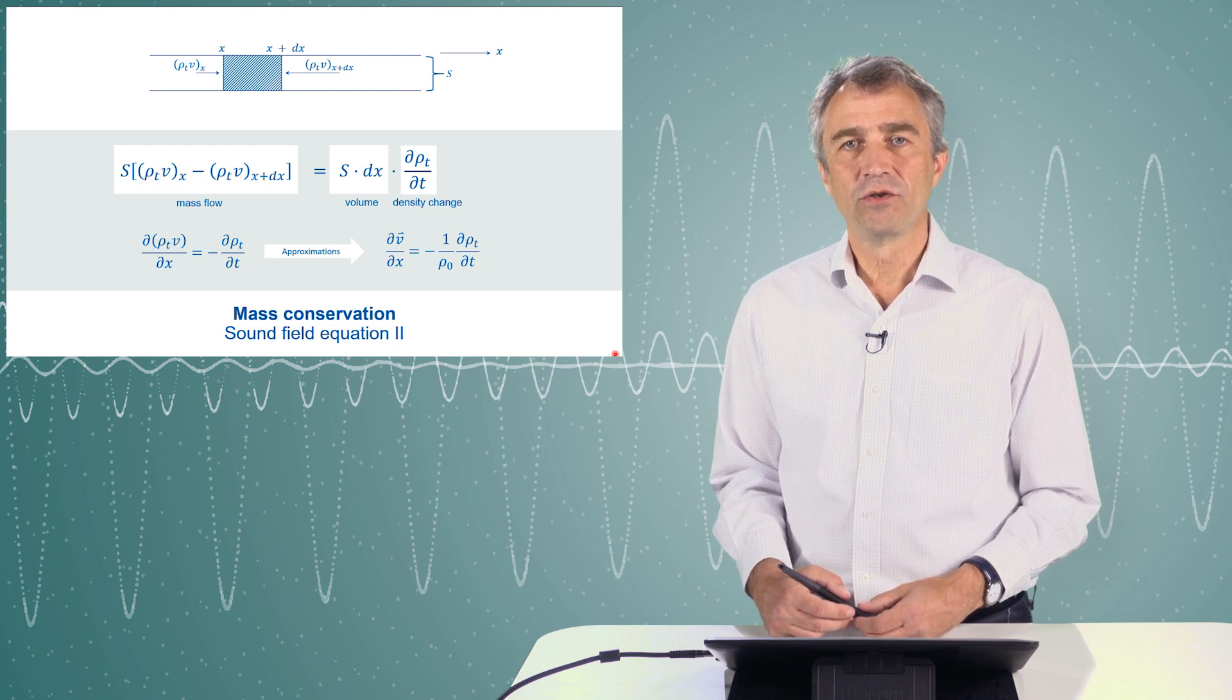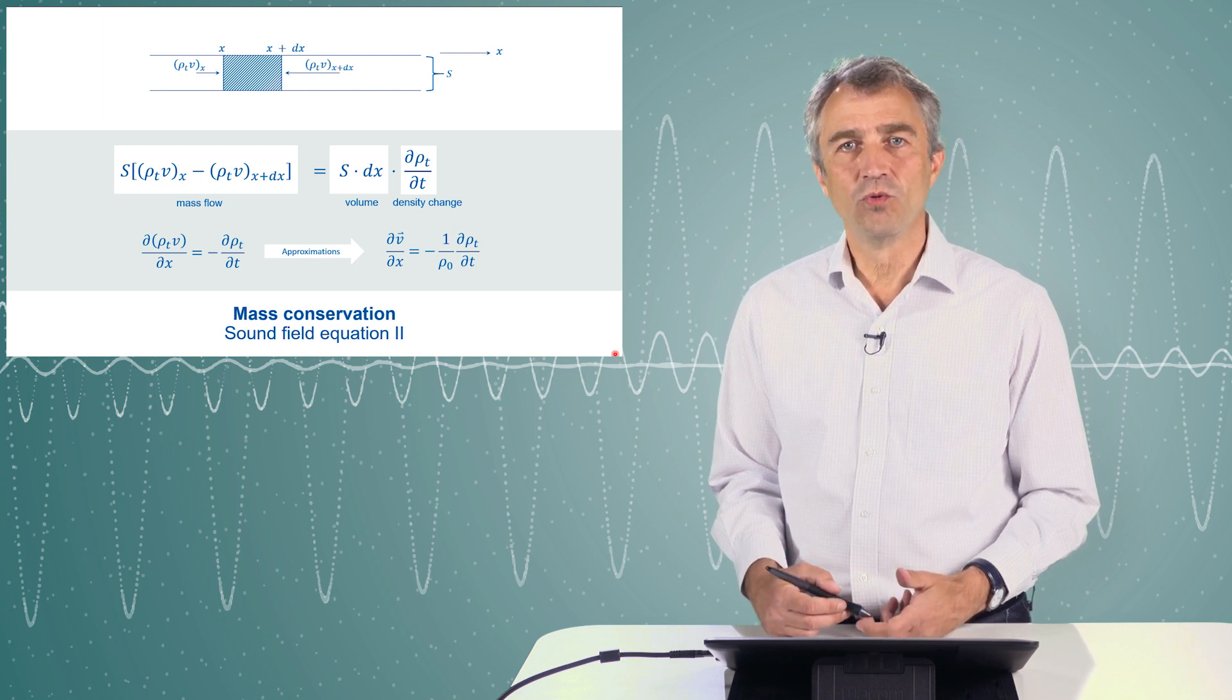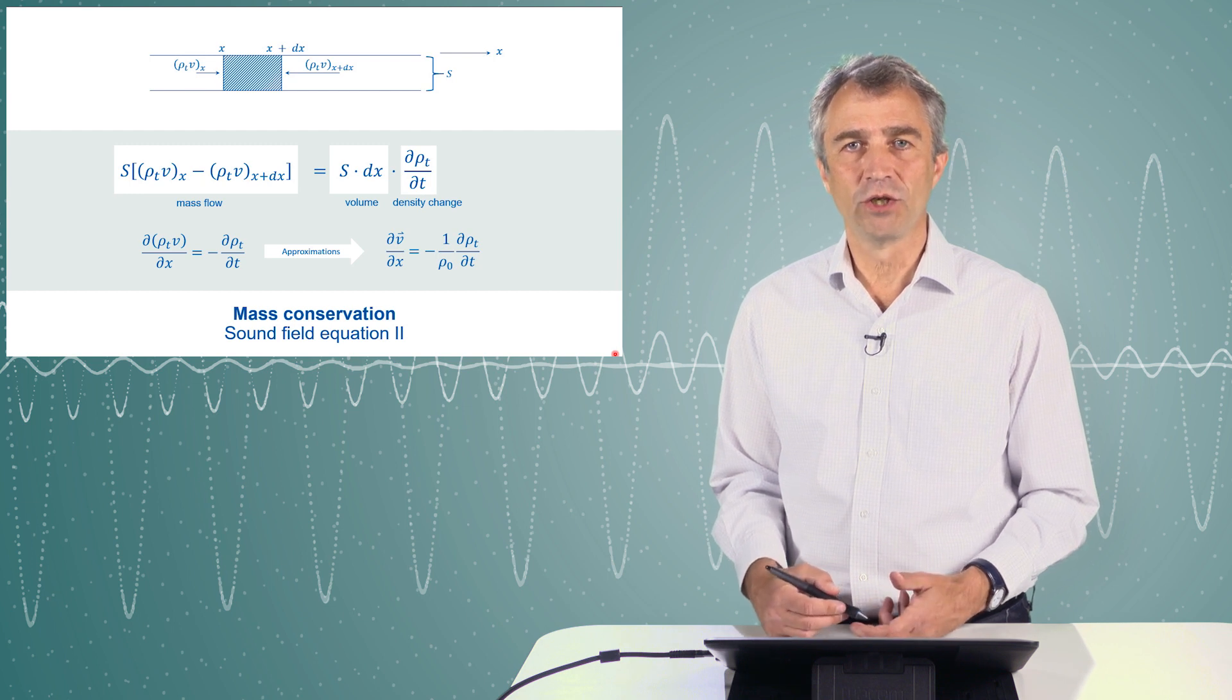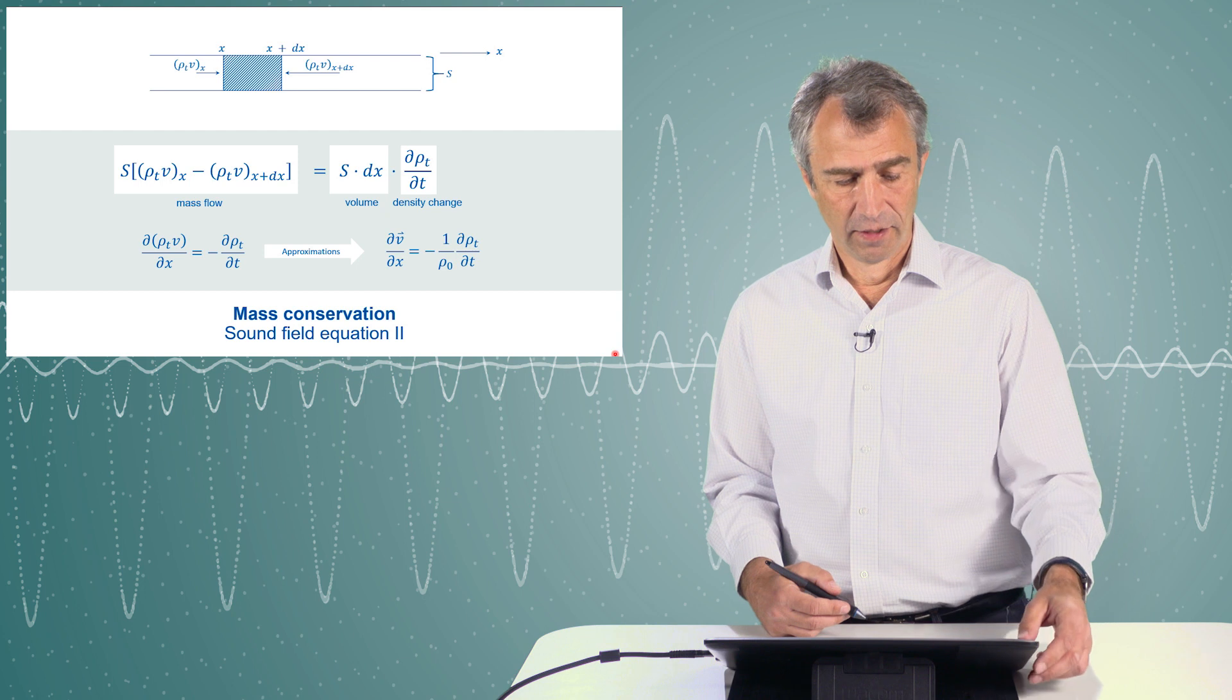Here we have an equation between the particle velocity and the density. We like to have just two variables because we only have two equations and there is no way to solve two equations with three variables. What to do?